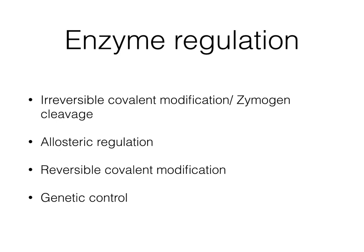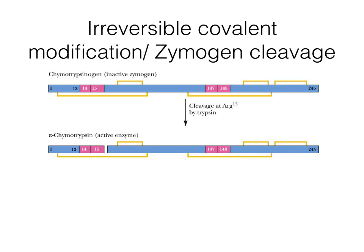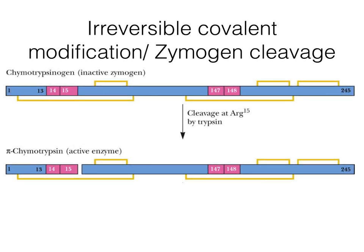The first mechanism is irreversible covalent modification or zymogen cleavage. This is particularly applicable to proteolytic enzymes, which are stored as inactive zymogens or proenzymes. These enzymes are activated by cleaving the zymogen. This is exemplified by chymotrypsinogen, which is produced in the pancreas. Chymotrypsinogen is composed of about 245 amino acids linked by intramolecular disulfide linkages. In the initial round of activation, the amino acids between positions 15 and 16 are cleaved off, yielding two fragments still linked together by disulfide linkage — we call this pi-chymotrypsin.